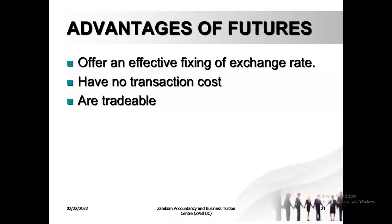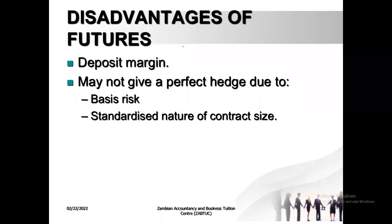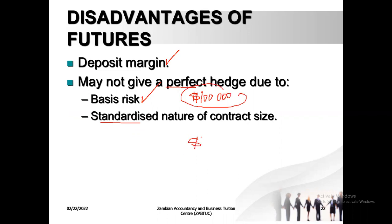Advantages of futures: they offer an effective fixing of the exchange rate, there are no transaction costs per se compared to options, and these are tradable. Disadvantages: the deposit margin is a cash flow issue, and futures may not give a perfect hedge. Why? Because of the basis risk, and also because they are standardized — for instance, if you are looking for only $100,000, there's no contract for exactly that amount so you apply it to $125,000, meaning you may get slightly more than what you need and this will make your hedge imperfect.